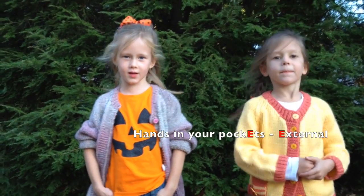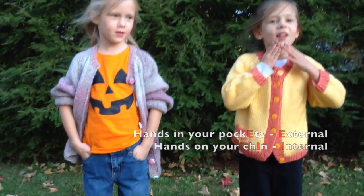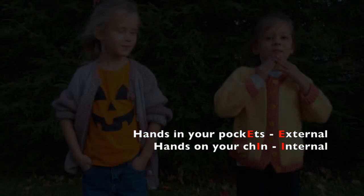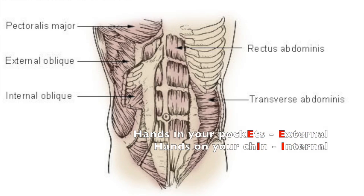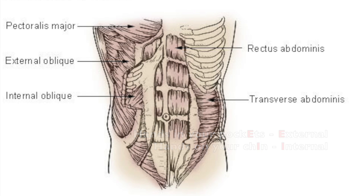Hands in your pocket! Hands on your chin! The external obliques run downward in a diagonal angle, just as somebody's forearms do if their hands are in their pockets. The internal obliques run up towards the midline, just as somebody's forearms do if they're touching their chin.